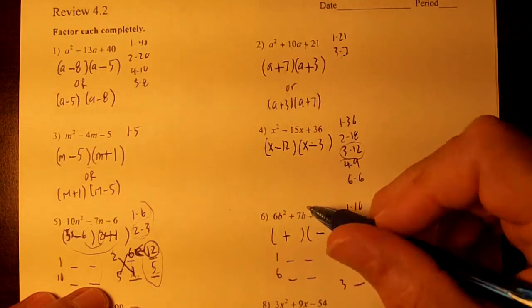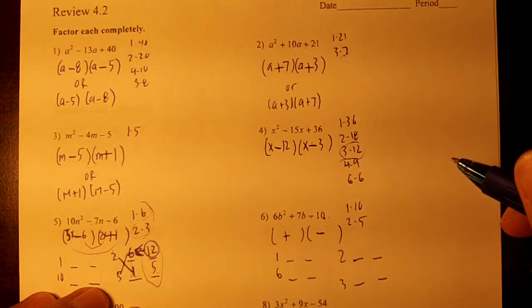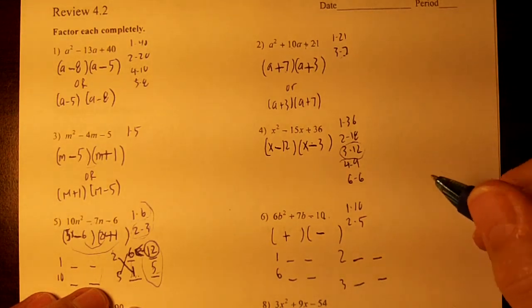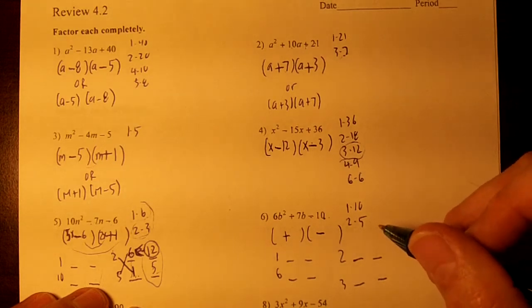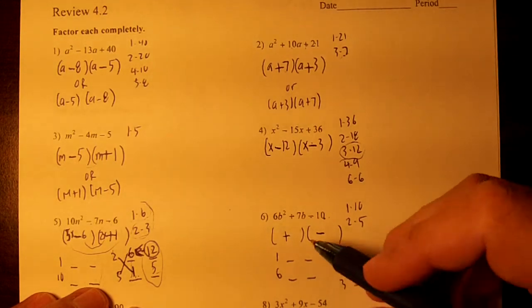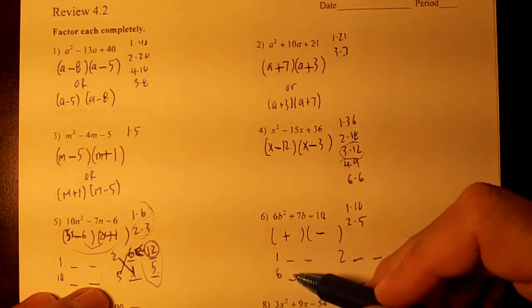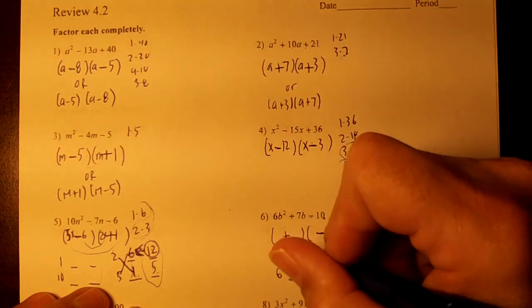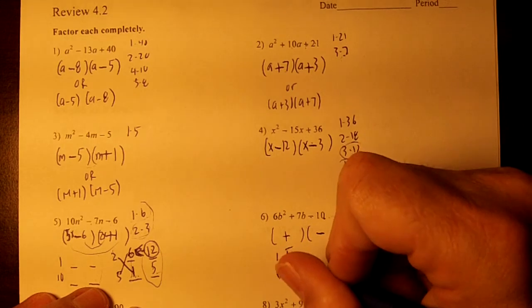Now then, we're going to subtract and get 7. So how can we plug this in? Subtract and get 7. 1 and 10, 2 and 5, subtract and get 7. 10 and 6? 5 and 12? This is going to be it. So the 5 goes by the 1 and the 2 goes by the 6.